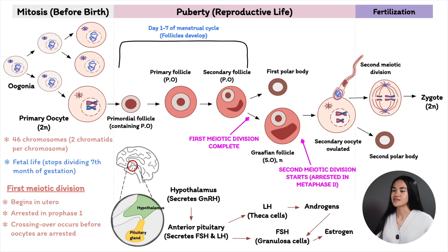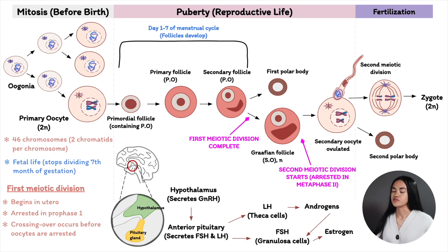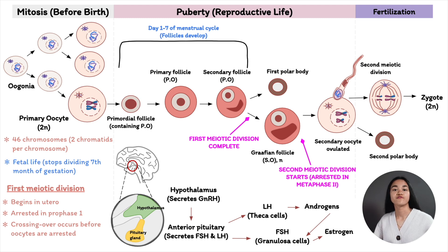The maturation phase of oogenesis involves two maturation divisions. The first maturation division is meiosis 1, producing the secondary oocyte and first polar body, during which the growth phase also occurs. The second maturation division is meiosis 2, completed when fertilization occurs.